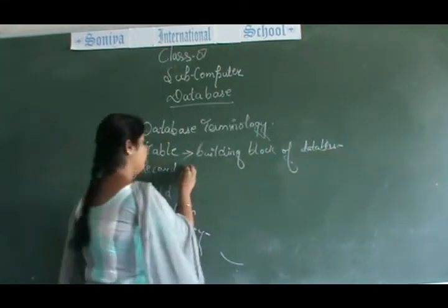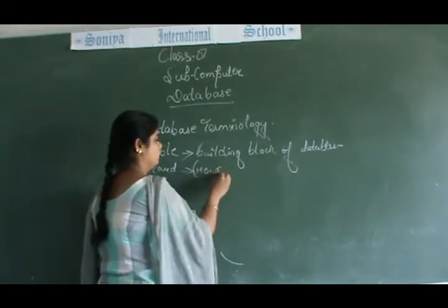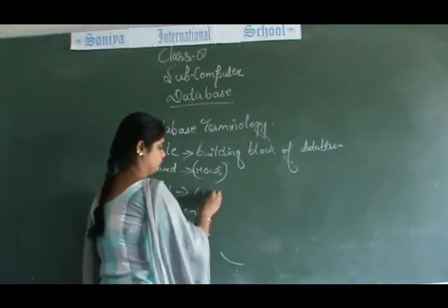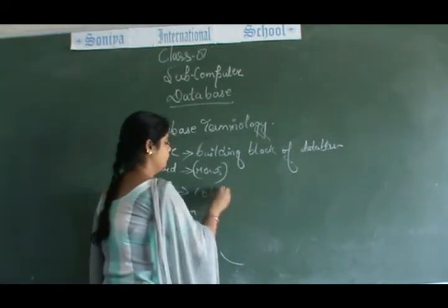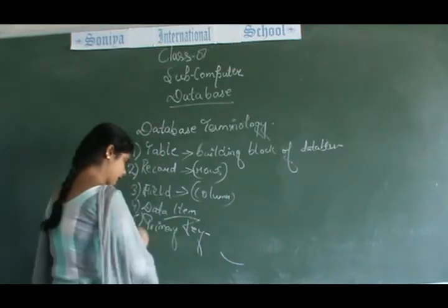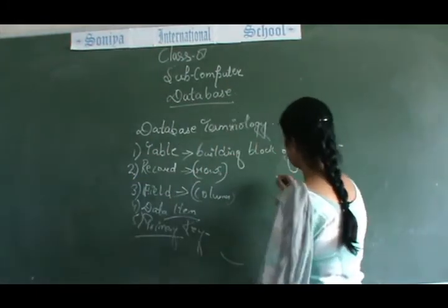Now record, we can call as rows. Field, we can call as column. Data item: in which the table field the records, that is known as data item. And primary key: the key which identifies the record uniquely. See, for example.